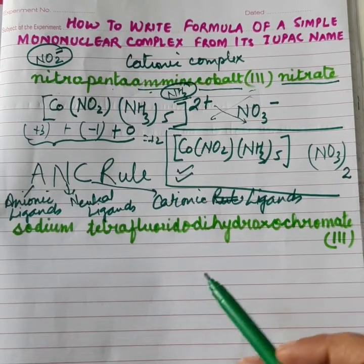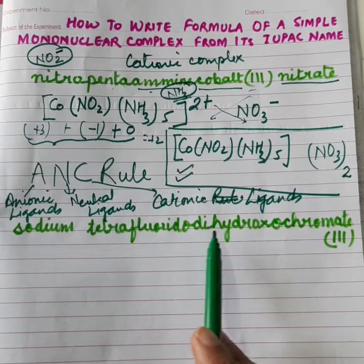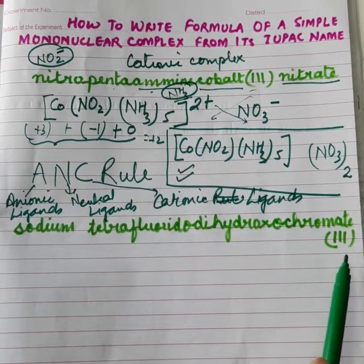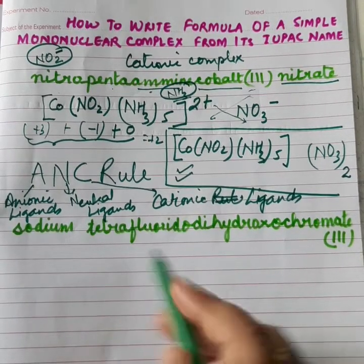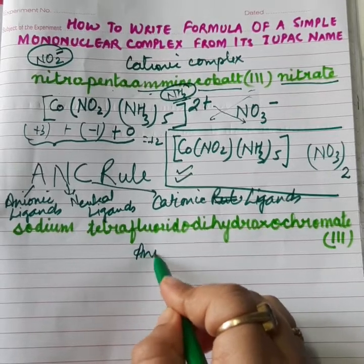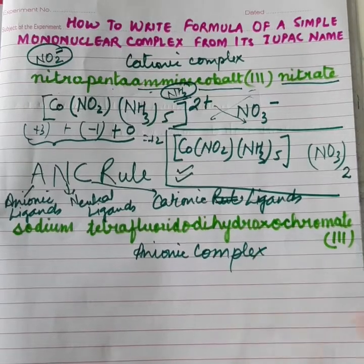Now, we will move on to the next example. Our next example is sodium tetrafluorido dihydroxochromate(III). So, by seeing the formula only, we are coming to know that it is an anionic complex. Anionic complex means its anion is a complex ion.